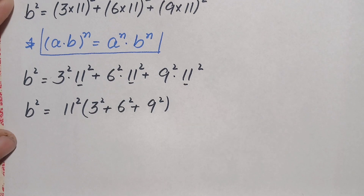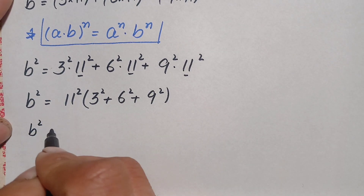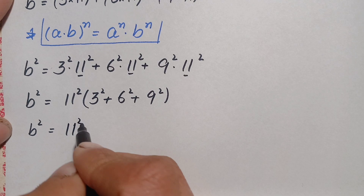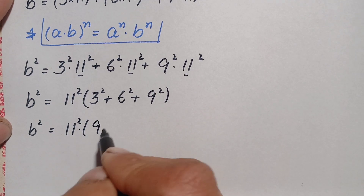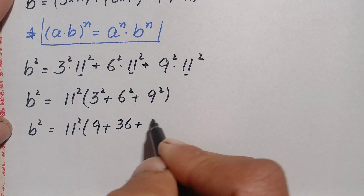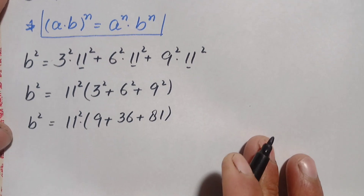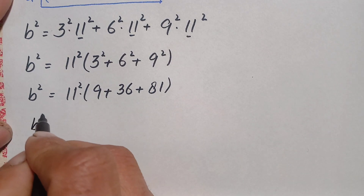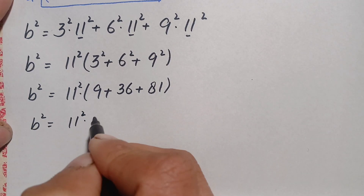Now let's simplify the right-hand side. We have b² = 11² × (3² + 6² + 9²), where 3² = 9, 6² = 36, and 9² = 81.